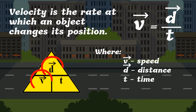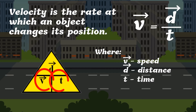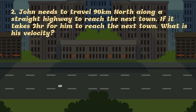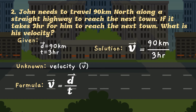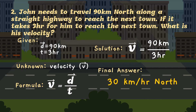If the given is displacement and velocity and you are looking for time, the formula will be displacement divided by velocity. And if the given is velocity and time and you are looking for displacement, the formula is velocity multiplied by time. Let us have a sample problem. John needs to travel 90 kilometers north along a straight highway to reach the next town. If it takes 3 hours for him to reach the next town, what is his velocity? In solving the problem, we first identify the given: 90 kilometers north, which is the displacement, and 3 hours, which is the time. The unknown is velocity. The formula is displacement divided by time. The solution is 90 kilometers north divided by 3 hours. The final answer is 30 kilometers per hour north.